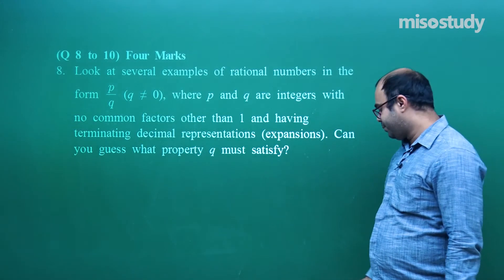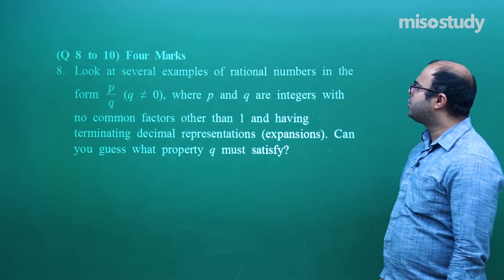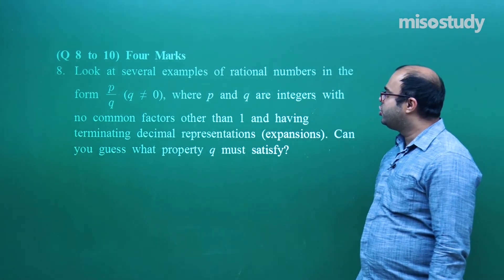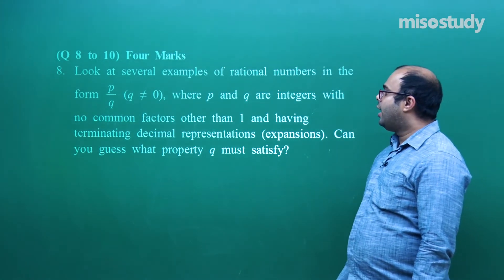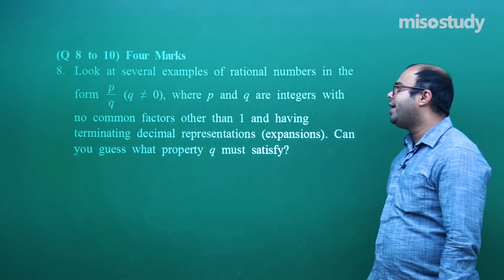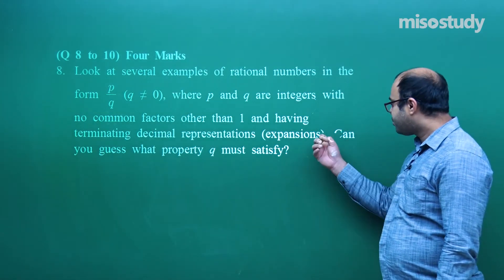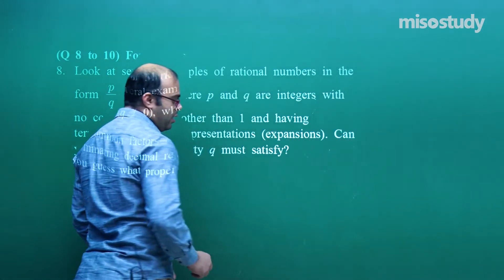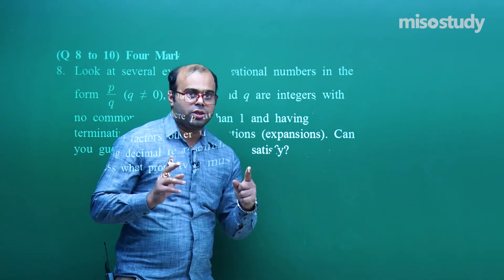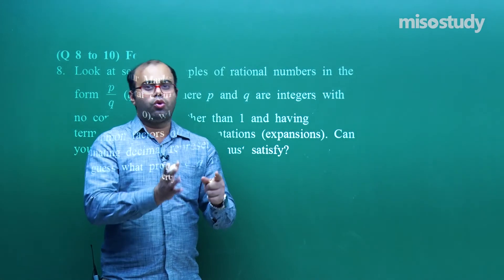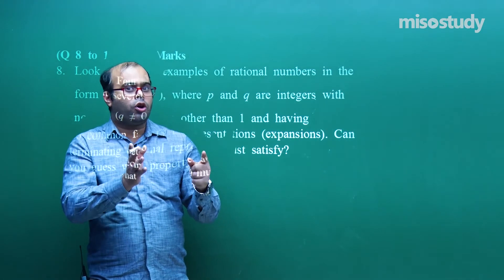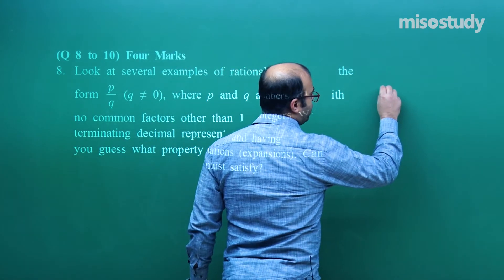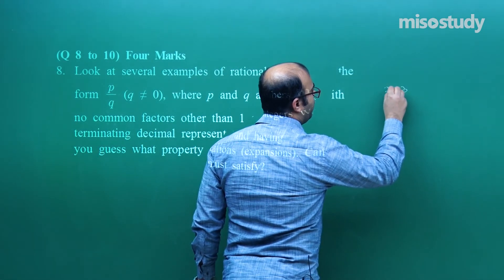Next question, worth 4 marks: look at several examples of rational numbers p/q (q ≠ 0, p and q integers with no common factors other than 1) that have terminating decimal representations. Can you guess what property q must have? There are two types of rational numbers — those whose decimal terminates and those that do not terminate but keep repeating. Here we focus on those that terminate. For example, 2.63 terminates.